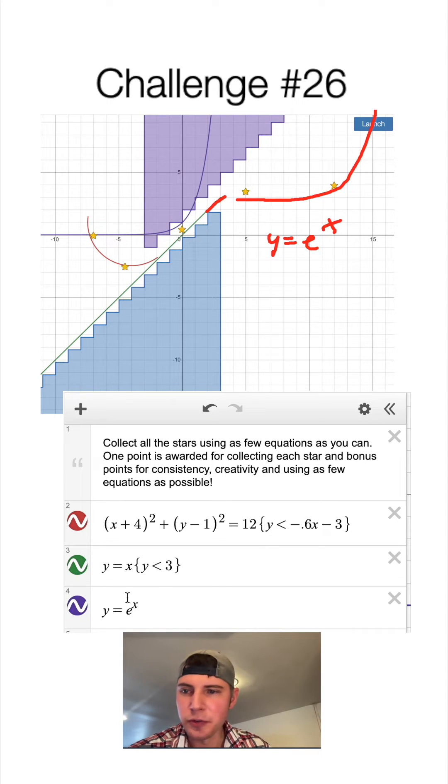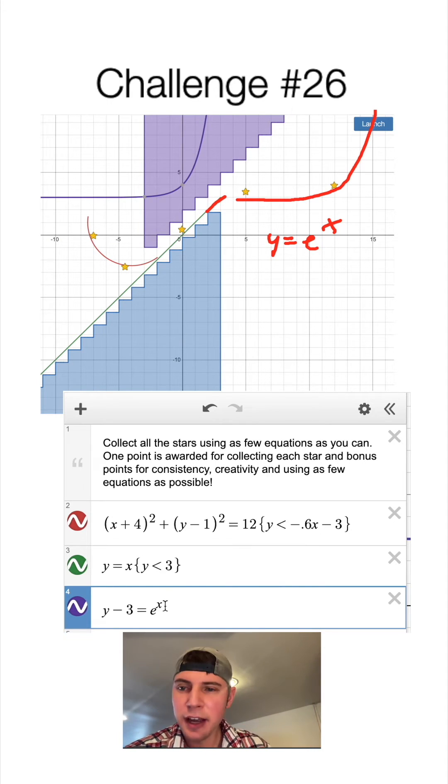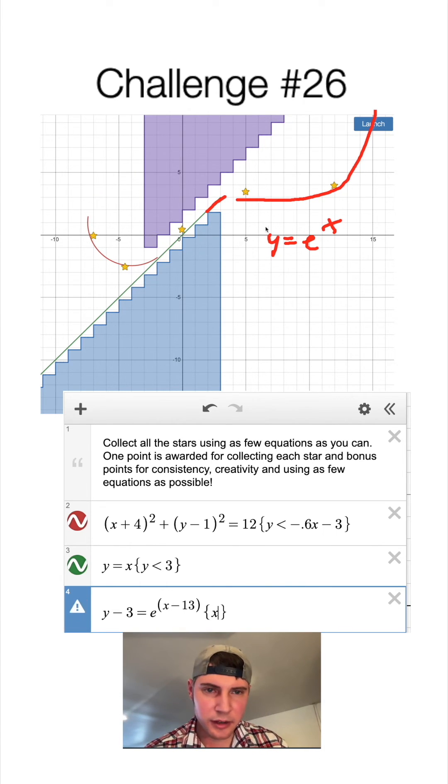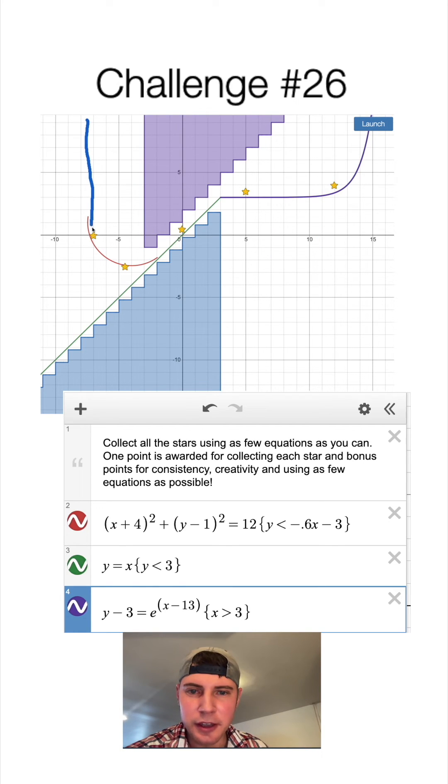We want to shift it over. First, to shift it up on the side with the y, we'll say minus three, and that'll bring it up three. And then inside with the x, in order to move it to the right, we'll want to do minus, put it about right here, so it'll be minus 13. And then we also need a restriction on this, so we'll make x greater than three.